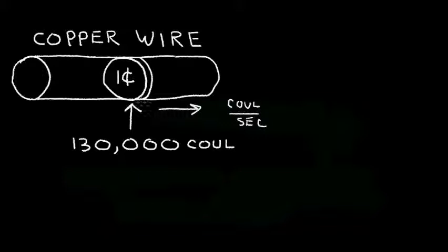Let's solve a problem. How long would it take for the charge in this penny, 130,000 coulombs of charge, to pass the surface of this penny with one amp of current flow, which is a coulomb per second? Put the video on pause and see if you can solve that problem.